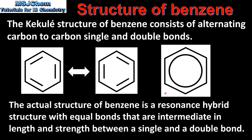On the right we have the symbol for benzene. In the benzene molecule the carbon-to-carbon bonds are of equal length and equal strength. This ring indicates the presence of delocalized pi electrons which give benzene its stability. As the benzene molecule does not contain carbon-to-carbon double bonds, it does not readily undergo addition reactions.